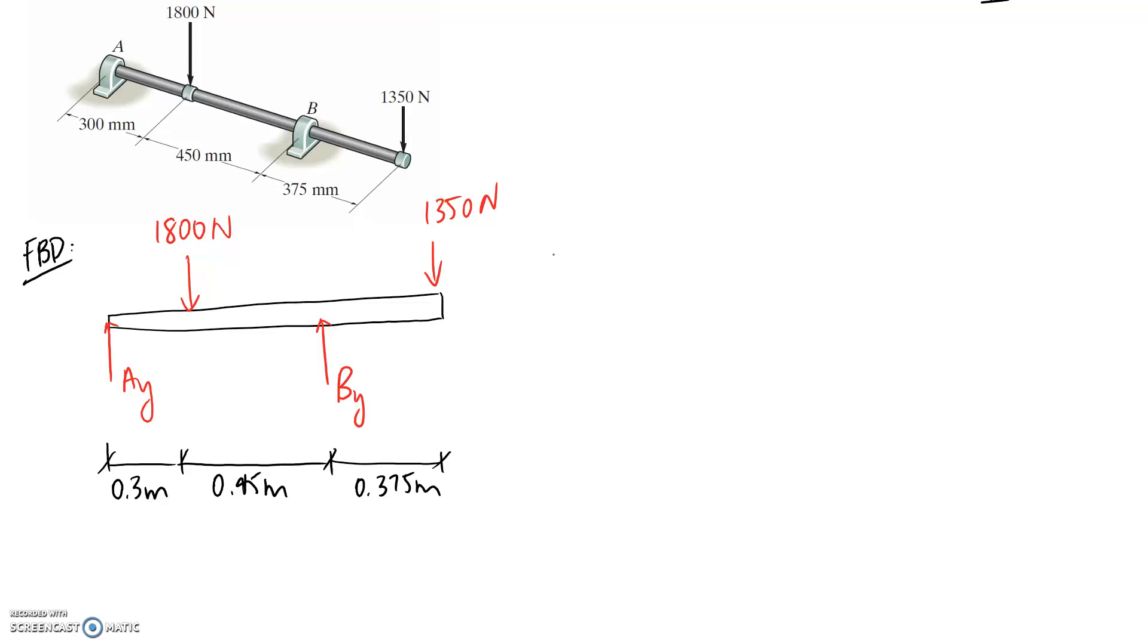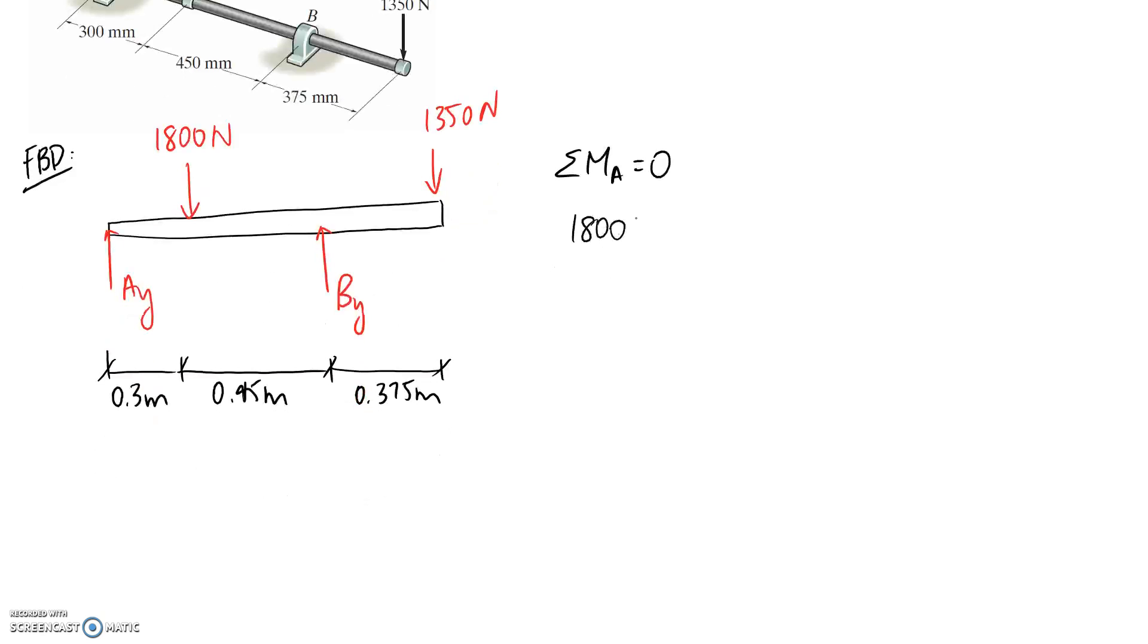So we need to go ahead and find Ay and By. I'm going to use our equilibrium equations, and I'm going to start by summing moments about point A. Ay acts through it, therefore it's not in the equation. We then have 1800 newtons acting at a distance in here of 0.3, and it's going to be clockwise. We've then got By acting at the distance in here, which is a total of 0.75. This is going to be anti-clockwise, so positive. We've then got 1350 acting at the full length of this beam, which corresponds to 1.125 meters, and this is going to try and rotate clockwise, so it's negative.